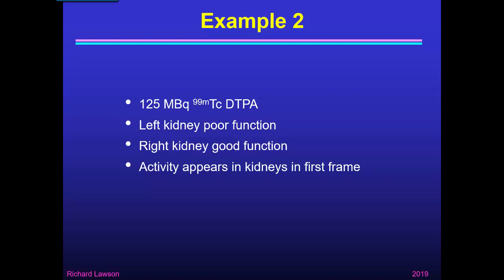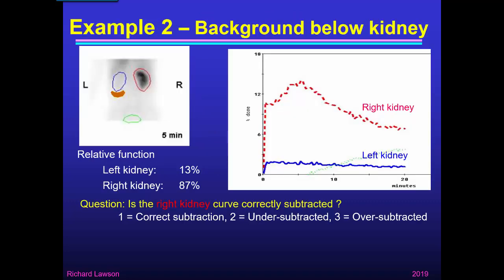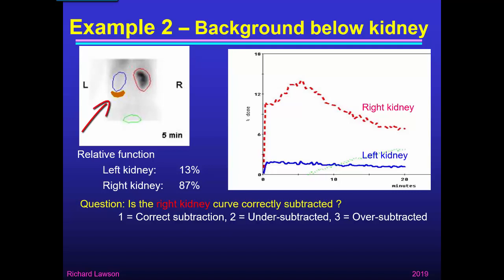This study was done with Technetium DTPA, and the patient has a left kidney with poor function and a right kidney with good function. Once again, activity appears in the kidneys in the first frame, so we don't need to worry about any delay. You can immediately see from the five-minute image that although the right kidney is well seen, the left kidney is very hard to see on this early frame.